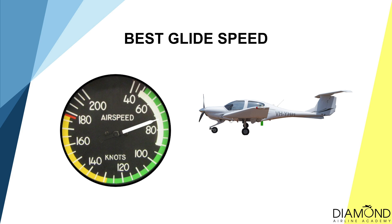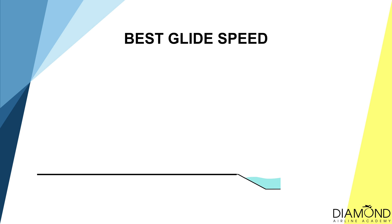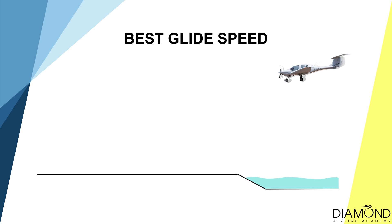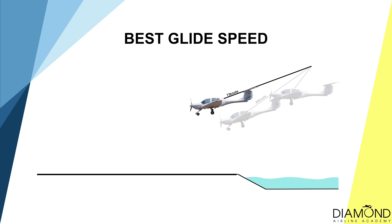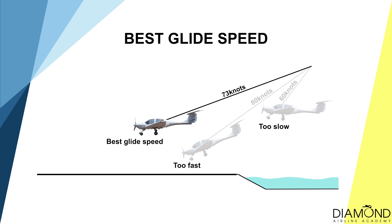The best glide speed varies with the weight of the aircraft. When the aircraft is 1,150 kilos, the best glide speed is 73 knots. When it's 1,200 kilos, the best glide speed is increased to 76 knots. When the best glide speed is maintained, the aircraft will maximise the gliding distance to cover more ground and have more options to land on.